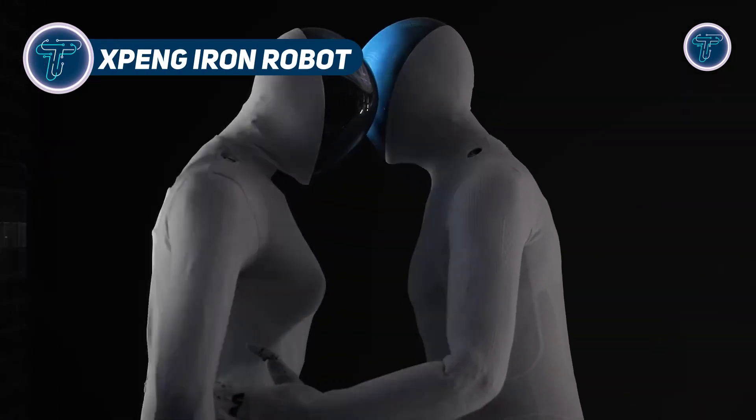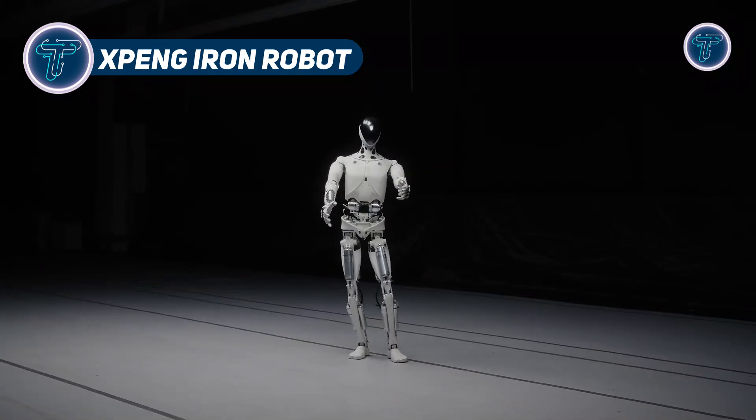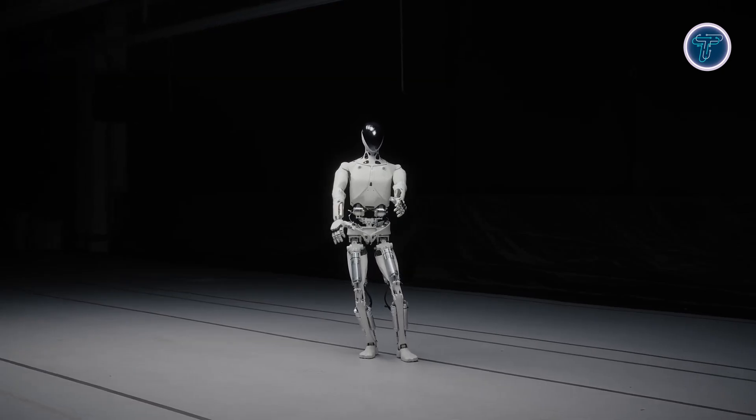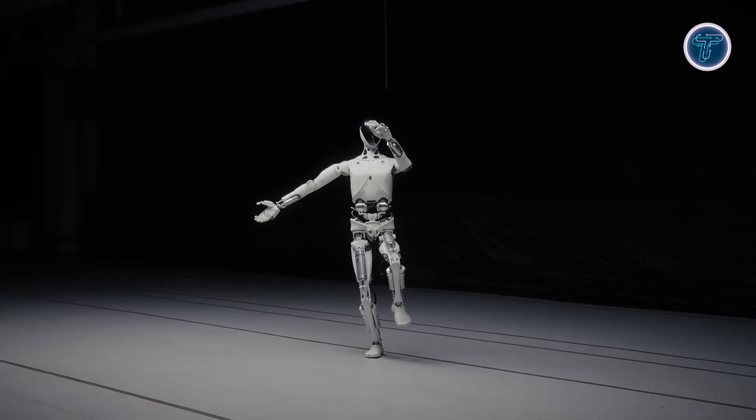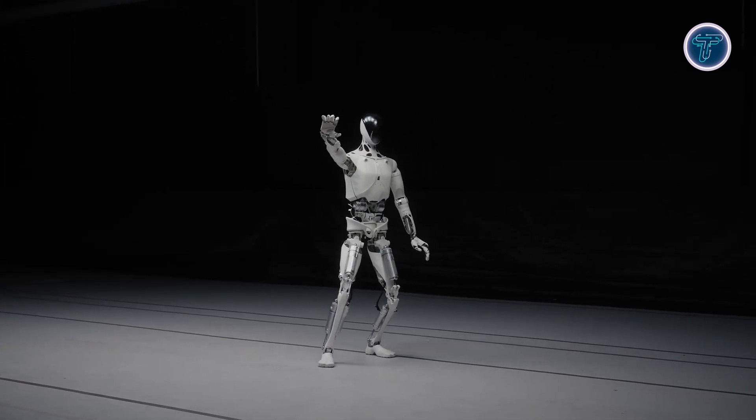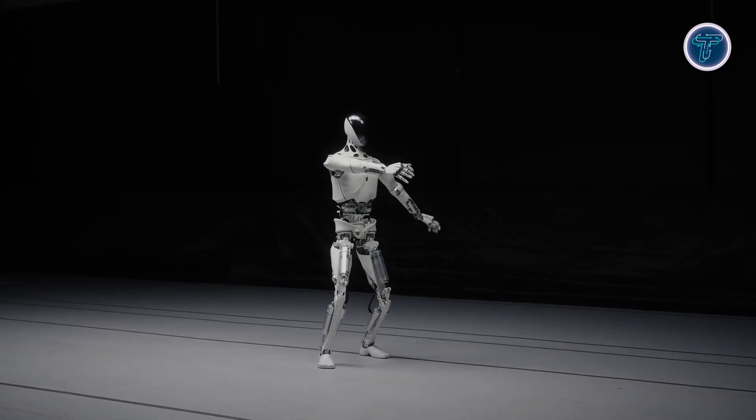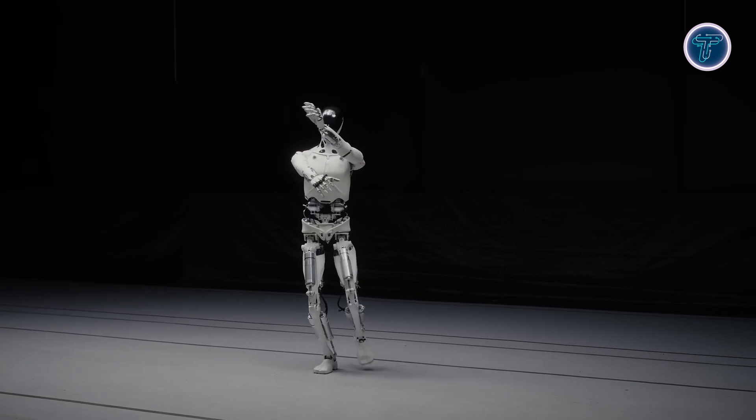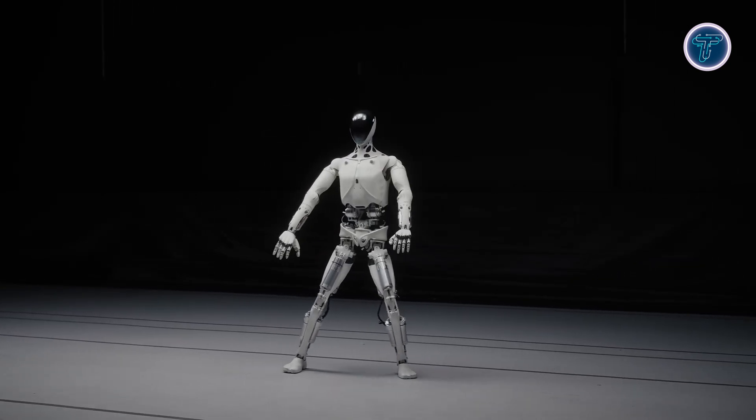Xpeng Iron Robot. Xpeng's Iron Robot represents a leap forward in humanoid robotics, blending artificial intelligence with highly realistic physical design. Built with a humanoid spine, bionic muscles and flexible synthetic skin, Iron features 82 degrees of freedom, including precise hand articulation, allowing it to move and interact with the real world naturally.